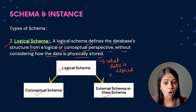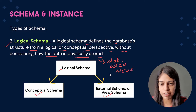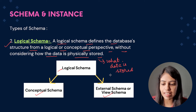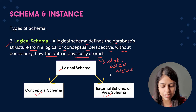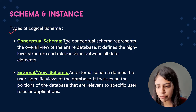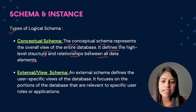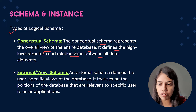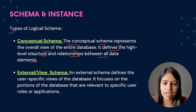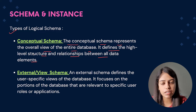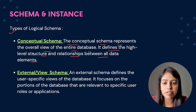Logical schema is of two types: the first is conceptual schema and the second is external or view schema — these terms are similar to what we read in the abstraction video. The conceptual schema represents the overall view of the entire database. It defines the high-level structure and relationships between all data elements — for example, making a blueprint of all columns and rows, giving data types like id holding only integers and name holding only character values.